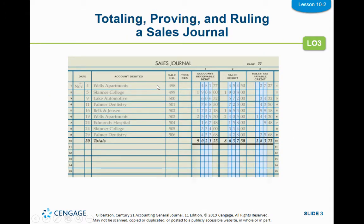Once you have all of those posted, you're going to add your totals up and post the totals of each of these columns to the account written at the top. So you're going to post this one to accounts receivable as a debit in the general ledger, this one to the sales account in the general ledger as a credit, and this one to sales tax payable in the general ledger as a credit.